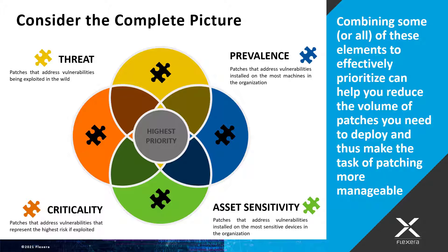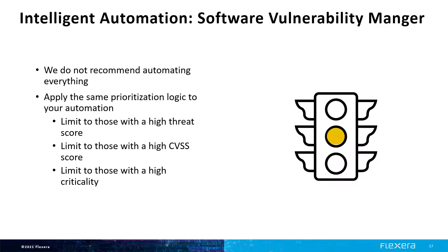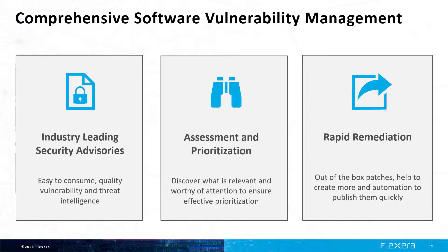Threat intelligence shows us that only about 8% of vulnerabilities actually get exploited. You can't get that kind of focus on criticality alone, because CVSS systems typically result in too many critical vulnerabilities. The majority of vulnerabilities that are exploited are of medium severity, between 5 and 8 on the CVSS criticality scale. SVM can automate the publishing of new patches to Workspace ONE as vendors release new versions, and you can limit the automation to your desired focus based on a combination of threat score, CVSS score, or criticality. SVM identifies what needs to be patched, helps you focus on those that matter most, and publishes those patches to Workspace ONE so you can close your risk window faster than ever before.